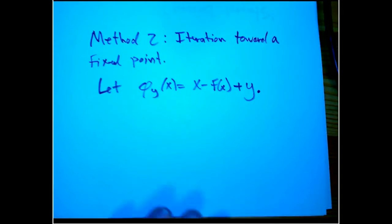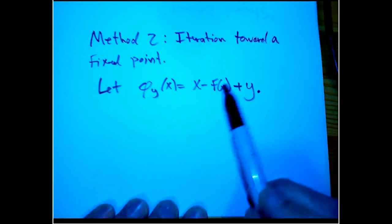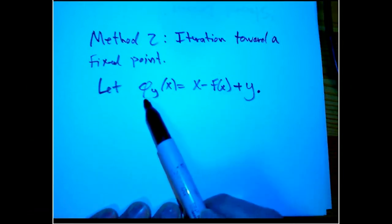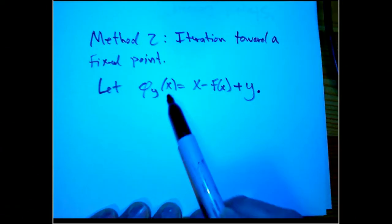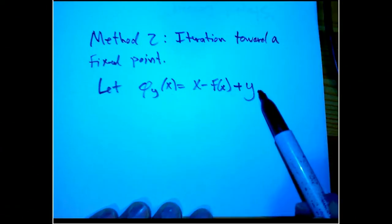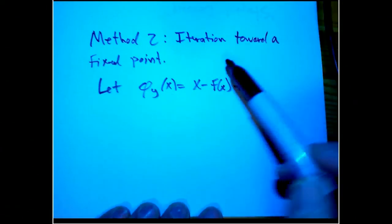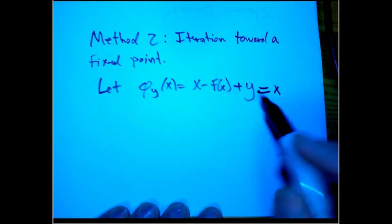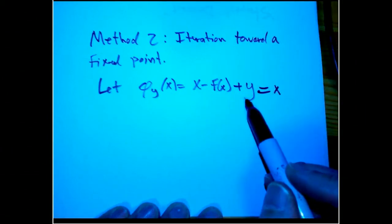The technique was starting with f of x, we want to solve y equals f of x. We want to find an x that solves y equals f of x. We create a new map φ_y(x) which is x minus f of x plus y. And now, if that's equal to x, we want to find a fixed point of that. If that's equal to x, clearly y is going to equal f of x.